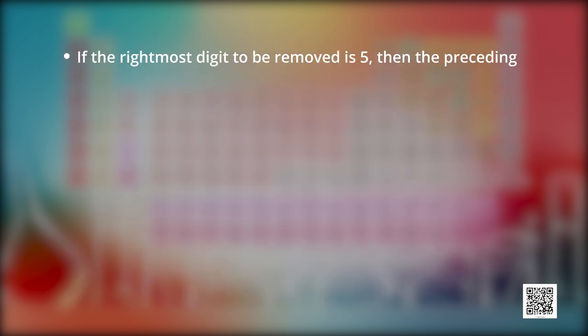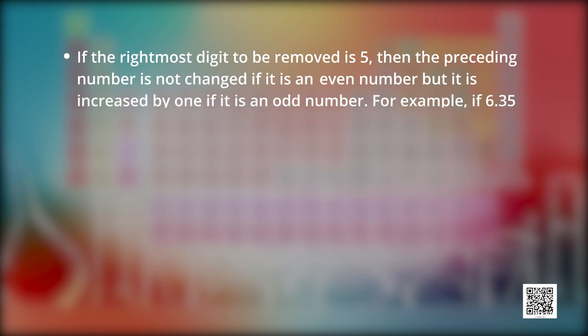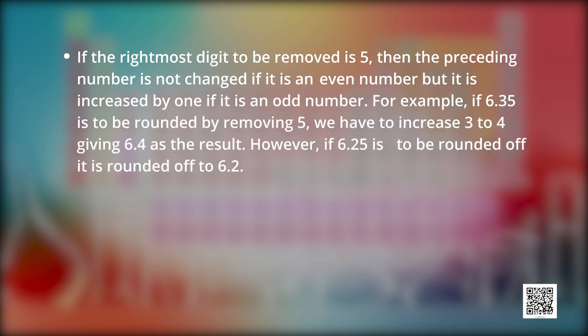The third rule: if the rightmost digit to be removed is 5, then the preceding number is not changed if it is an even number, but it is increased by 1 if it is an odd number. For example, if 6.35 is to be rounded by removing 5, we have to increase 3 to 4, giving 6.4 as a result. However, if 6.25 is to be rounded off, it is rounded off up to 6.2.